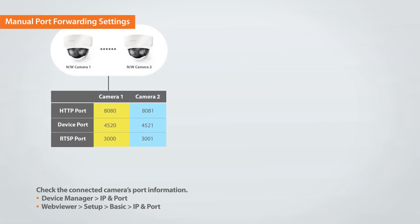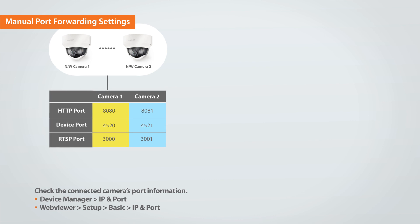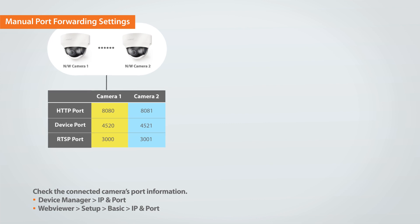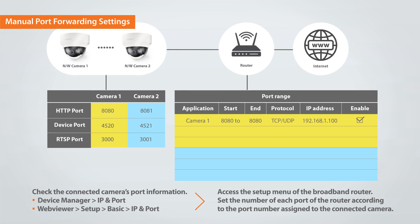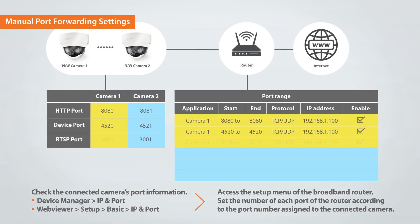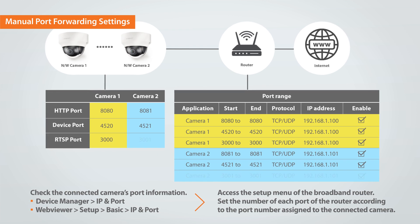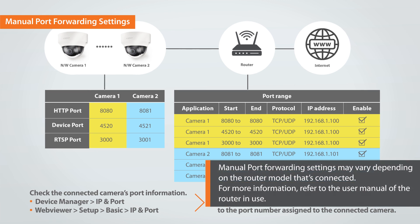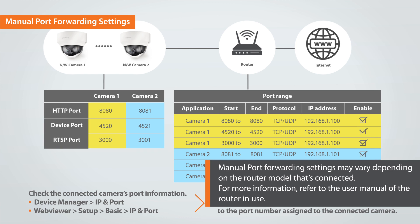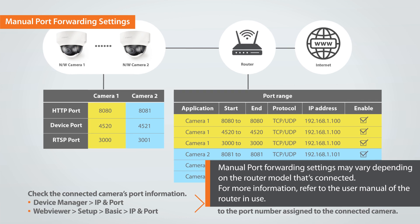To set port forwarding manually, first check the camera's IP address and port information. Access either: 1. Device Manager, IP and Port, or 2. Web Viewer, Setup, Basic, IP and Port. Access the Setup menu of the broadband router and set the number of each port of the router according to the port number assigned to the connected camera. Save the settings and port forwarding is completed. Manual port forwarding settings may vary depending on the router model. For more information, refer to the user manual of the router in use.